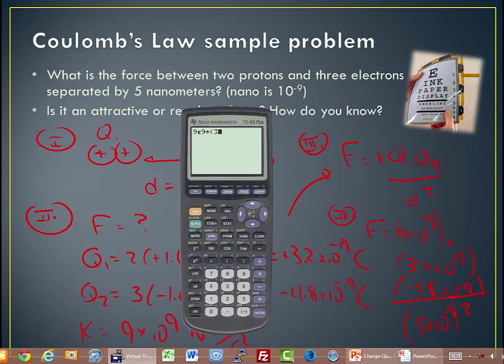multiplied by Q1, which is 3.2 times 10 to the, so we're going to do this second E button, negative 19th coulombs, times negative 4.8, that's the three electrons, times 10 to the negative 19th. And that'll give me the top part of the equation.